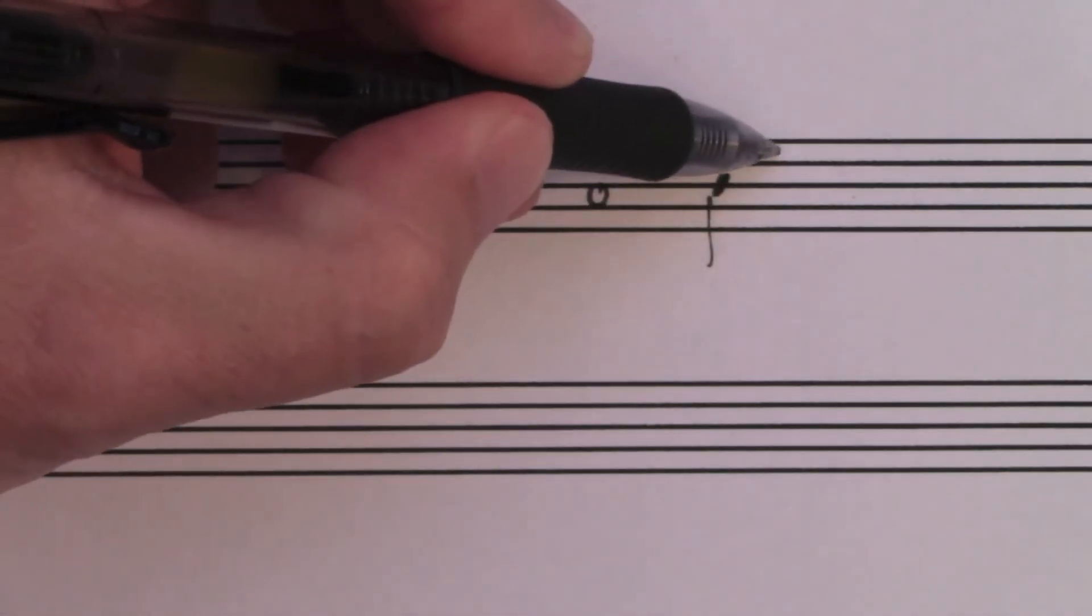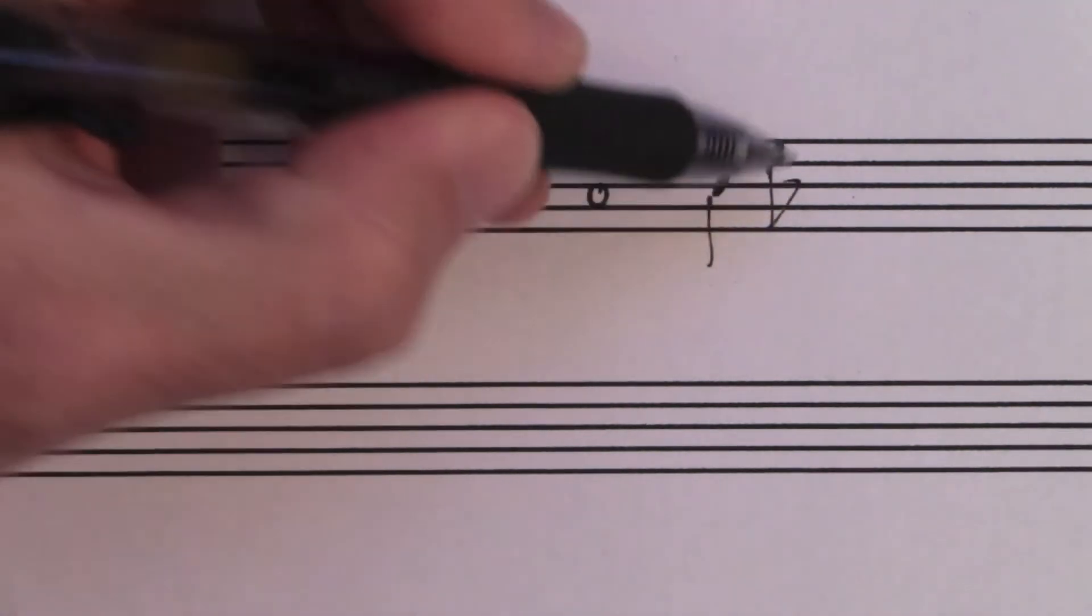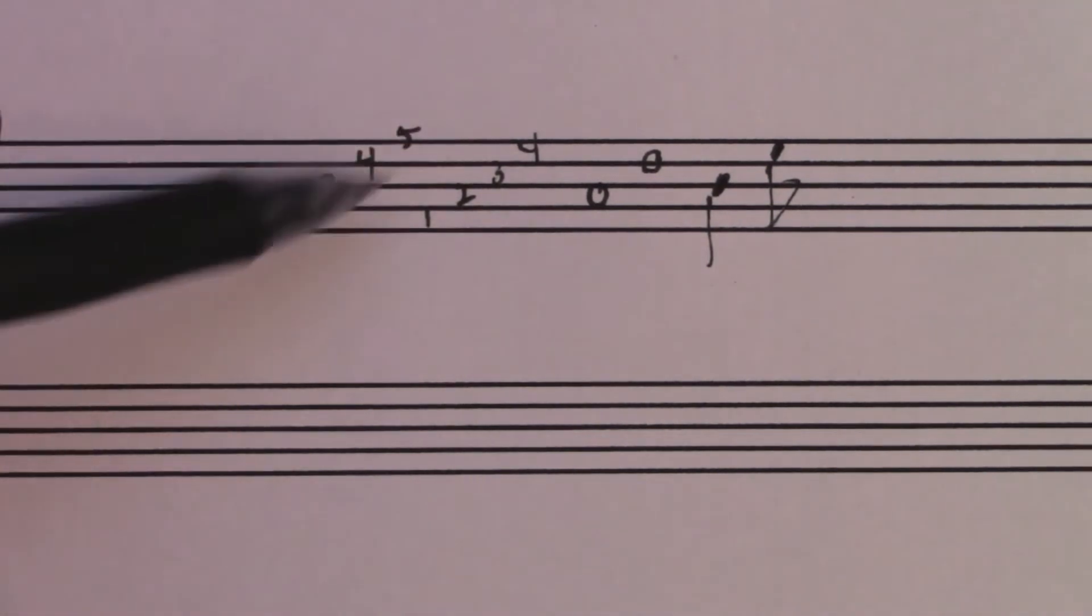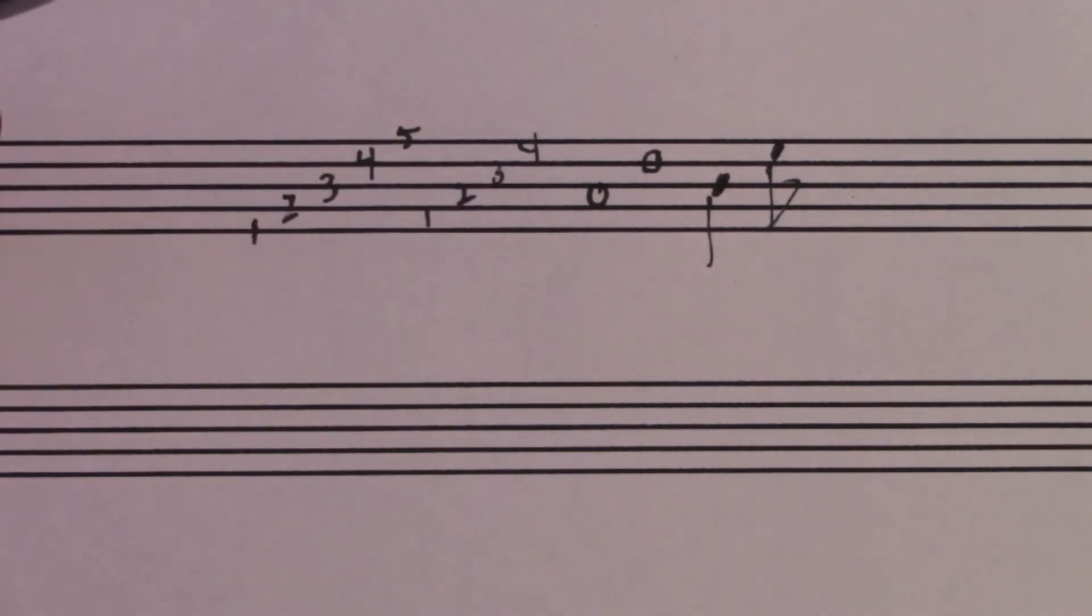Notes can be filled in or they can be not filled in, they can have stems and flags and stuff. We will talk about that later. But that's the basic idea of the staff. Notes go on these five lines and four spaces.